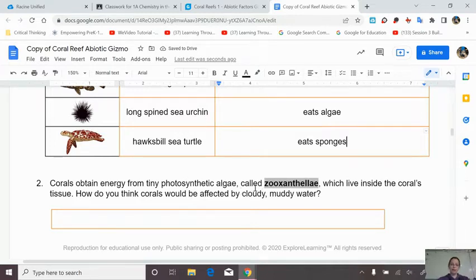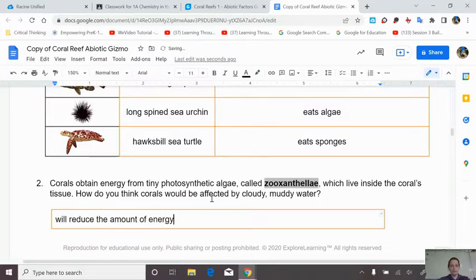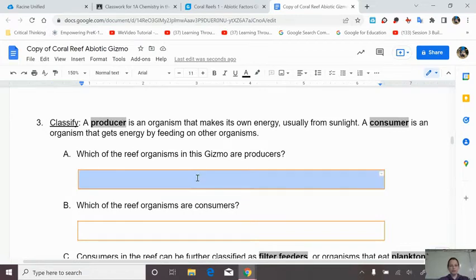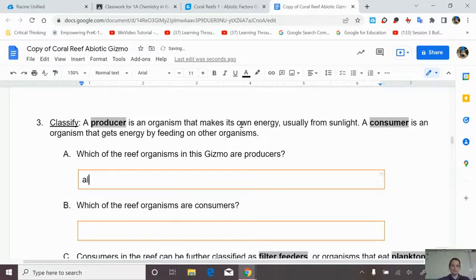Next we have this one with the green stripe, a yellowtail snapper, eats fish, shrimp, crabs, worms. I'm going to say eats fish. It's a carnivore. And we have this sort of brown one, Nassau grouper eats fish. We have this spiky guy here, long-spined sea urchin, and it grazes on algae. We have a turtle, hawksbill sea turtle eats sponges. Corals obtain energy from tiny photosynthetic algae called zooxanthellae, fun to say, which live inside the coral's tissue. How do you think corals would be affected by cloudy, muddy water?